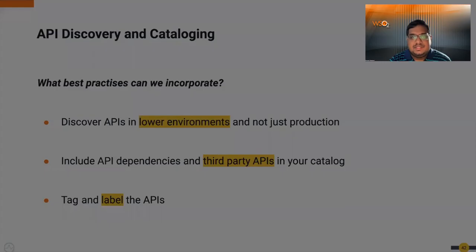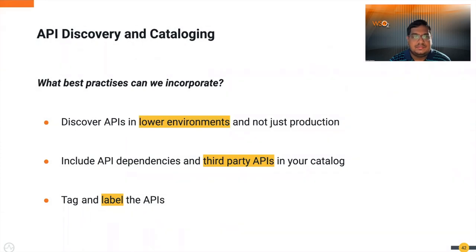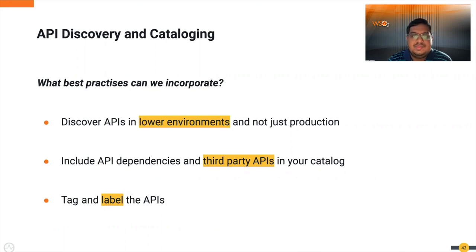Some best practices for API discovery: discover APIs in lower environments, not just in production, as lower environments often have less strict security and are more prone to attack. Include API dependencies and third-party APIs in your catalog, as they are also part of the attack surface. Tag and label your APIs and microservices during development, which makes it easier to manage many other API lifecycle activities.